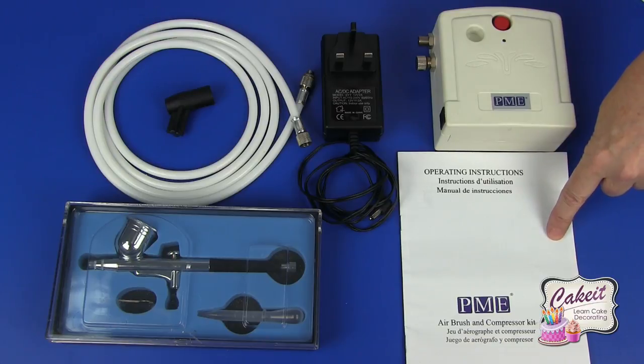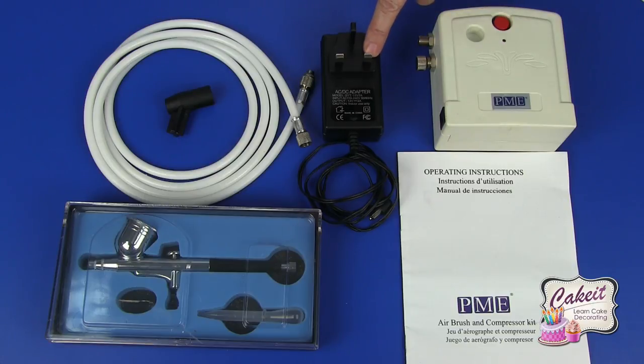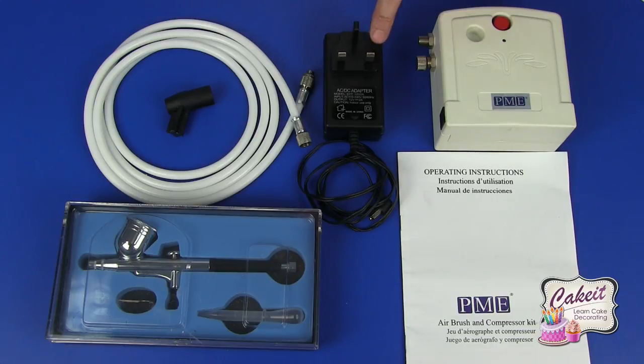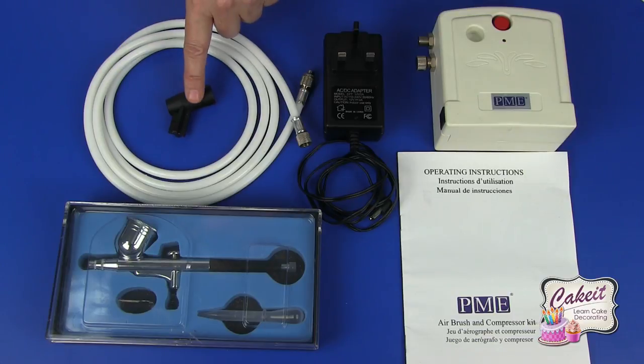First of all we have the Operating Instruction Manual. We have the Compressor with the On-Off Switch. We have the 12V AC adapter available in UK, EU and US power cables. We have 1.5m of flexible hose and we have the airbrush holder which fits into the recess in the compressor.